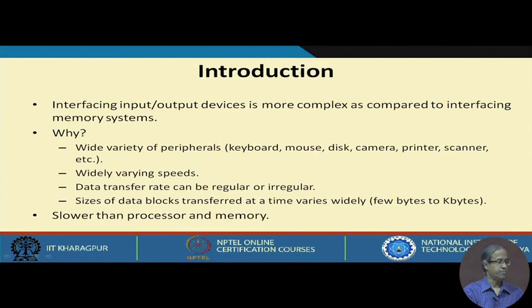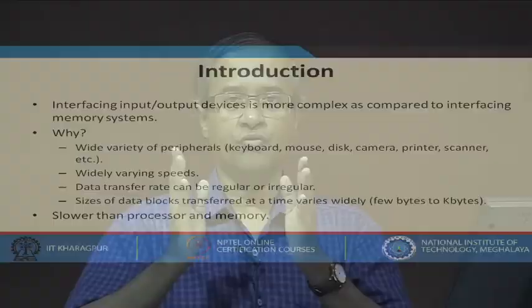The first thing to note is that interfacing I/O devices is more complex as compared to interfacing memory systems. When we talk about interfacing memory systems, there can be static RAM or dynamic RAM. Static RAMs are faster than dynamic RAM, but when you interface them, the speeds of the memory systems are known to us.